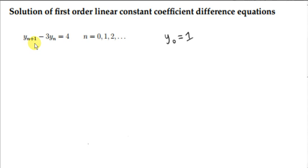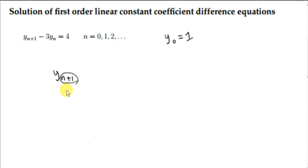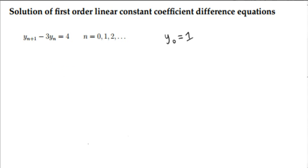Here we have a first-order linear constant coefficient difference equation. Why is this equation first order? The highest order in it is n plus 1, so that makes it a first-order difference equation. If the highest order was n plus 2, then we would have a second-order difference equation.